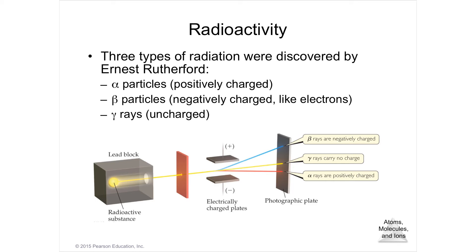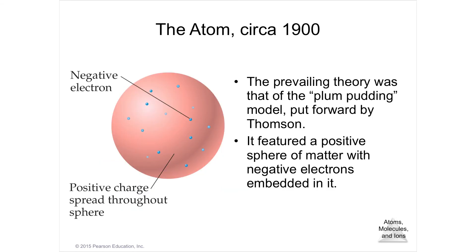Ernest Rutherford did a lot to develop the idea of how an atom actually works. Around the turn of the century, the prevailing idea was J.J. Thomson's plum pudding model. Thompson was British, and plum pudding — a steamed bread pudding with raisins, nuts, and candied fruit — inspired his model: he said the negatives and positives must be mixed together just like plum pudding, with the negative electrons like raisins embedded in a positive mass. That was the prevailing view, but Rutherford was about to do another experiment.